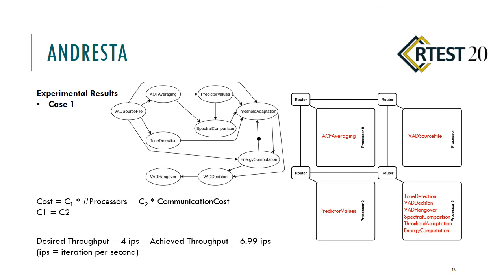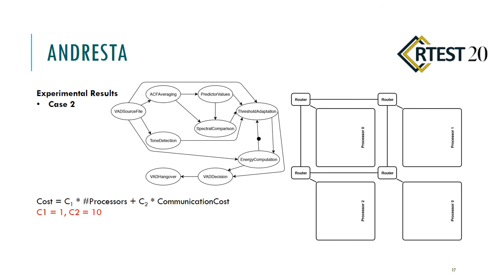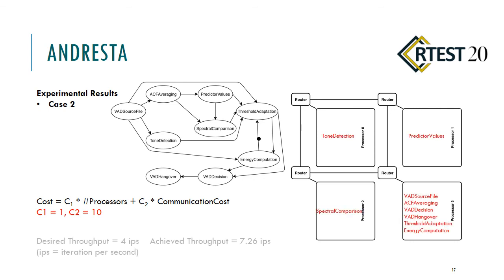It is worthwhile to mention that in the second case, we changed the coefficients of our cost function. Because we wanted to increase the cost of communication, we changed the communication coefficient to 10. As a result, our mapping changed, and our achieved throughput after implementation was approximately 7.3 IPS.